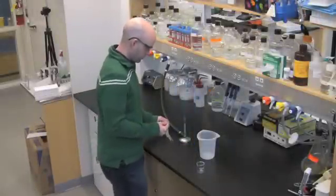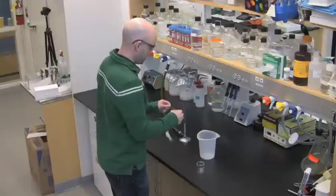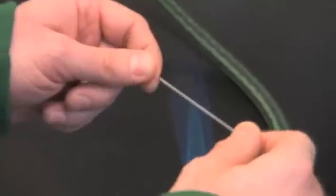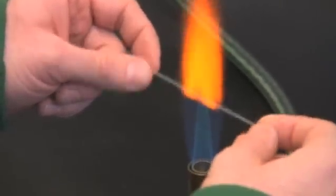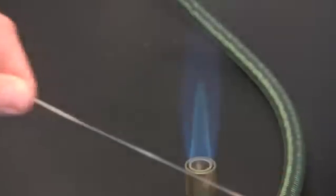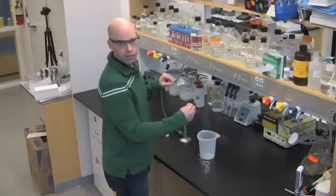To pull the tubes, you want to grab them on both ends and gently roll them in your fingers as you put it over the fire, over the flame. Putting it at just the tip of the blue cone, and as you feel it melt, you want to remove it and pull. And as the glass cools, it'll stop you from pulling any further.